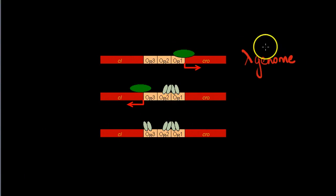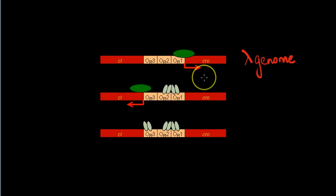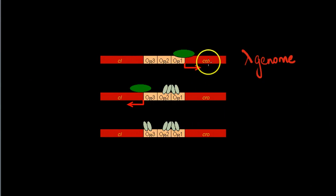There are three scenarios. In the first, as you can see over here, the CI repressor protein is absent. In that case, the RNA polymerase will result in the transcription of the CRO gene.